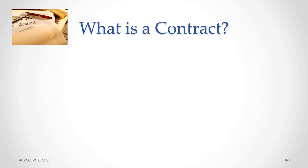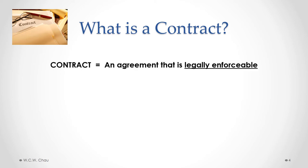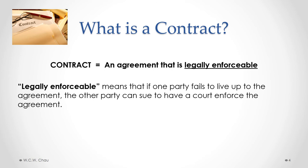What is a contract in law? A contract is defined as an agreement that is legally enforceable. So there are two components to that definition: the first component is an agreement, and the second component is that the agreement is legally enforceable. What do we mean by legally enforceable? It means that if one party fails to live up to the agreement — in other words, they're in breach of the contract — the other party can sue to have a court enforce the agreement.